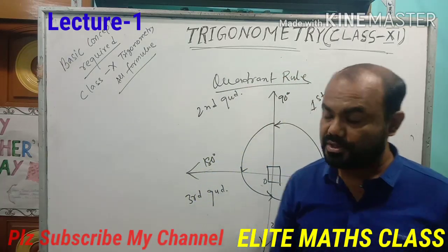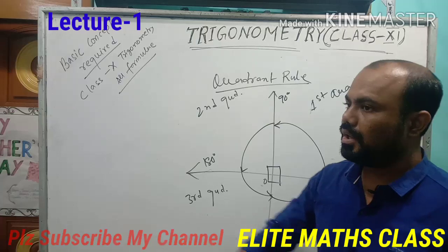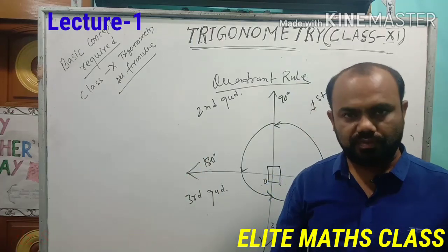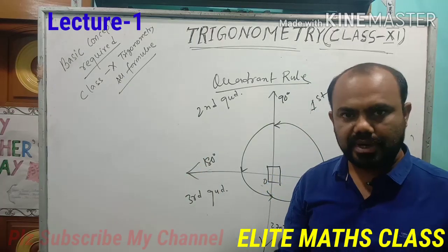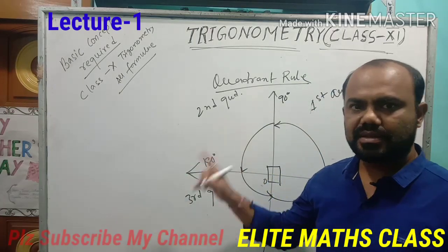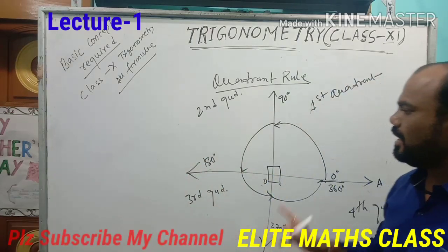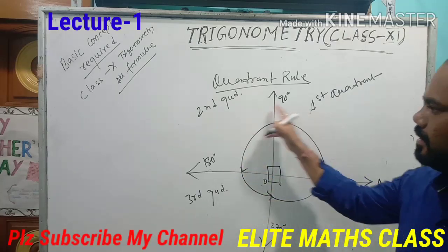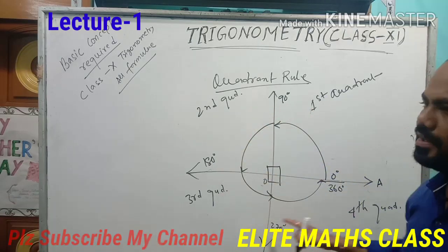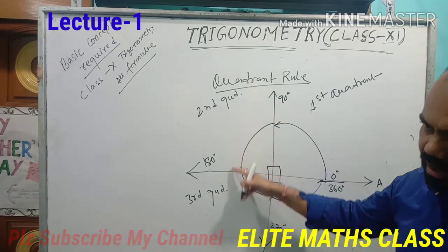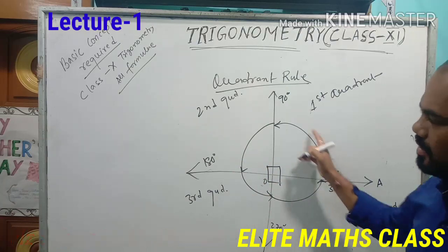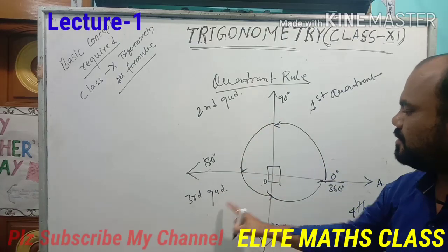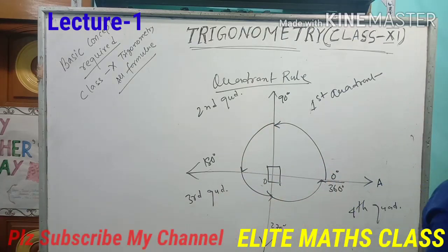In coordinate geometry also, we divide the whole XY plane into four parts: first, second, third, fourth quadrant. And see the rule — the numbering of the quadrant is according to the anticlockwise rotation: first, second, third, fourth.